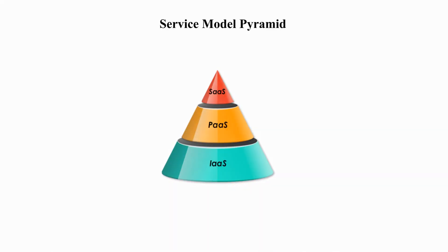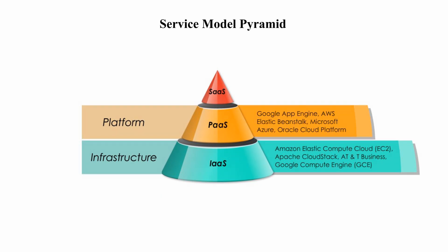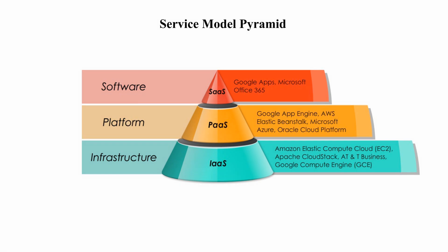Now let's look at three cloud computing service models in the form of a pyramid. IaaS is about infrastructure — the basic IT facilities. Examples of IaaS include Amazon Elastic Compute Cloud, Apache CloudStack, and Google Compute Engine. On top of IaaS is PaaS, which is about platform. Examples include Google App Engine, AWS Elastic Beanstalk, Microsoft Azure, and Oracle Cloud Platform. SaaS sits on the top of the pyramid and is about software or applications. Google Apps and Microsoft Office 365 are two examples.